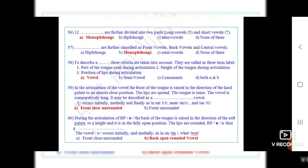Question number 57: Dot dot are further classified as front vowels, back vowels, and central vowels. Correct option is B, monophthongs.